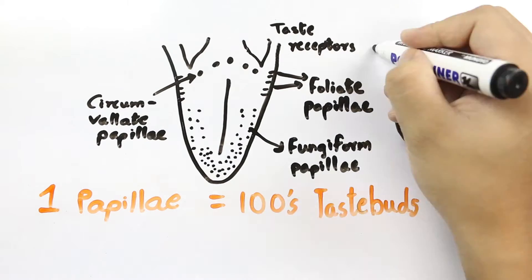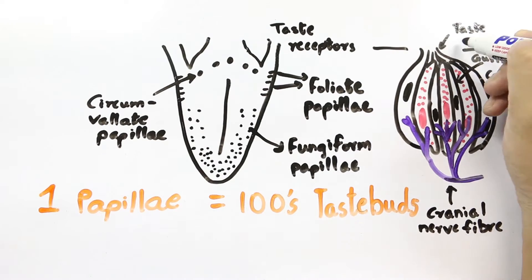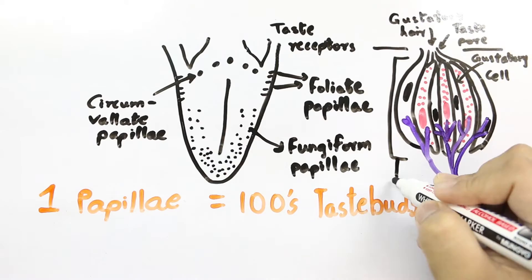Others are located on the roof, sides and back of the mouth and in the throat. Each taste bud contains 50 to 100 taste receptor cells.